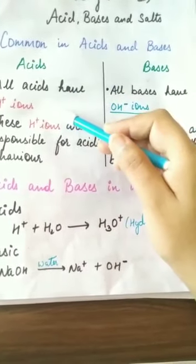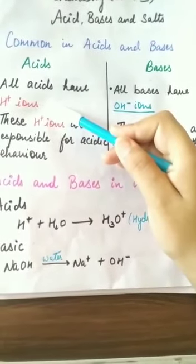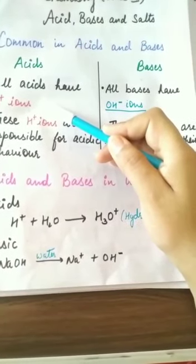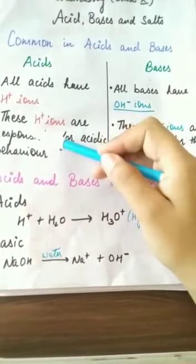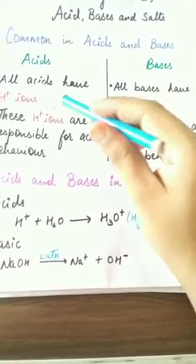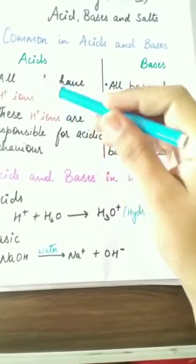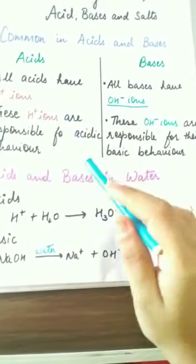The number of hydrogen plus ions may vary, it may be less or more, but all acids have H+ ions in their solution. These H+ ions are responsible for their acidic behavior. Acids are acidic because of these H+ ions.